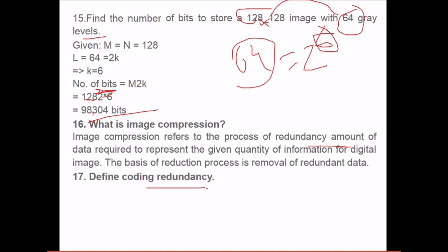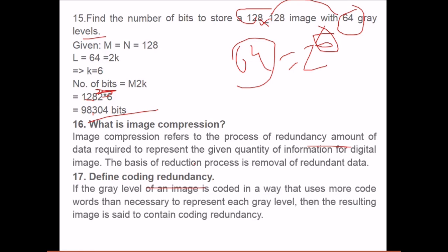With this one more question comes: what is coding redundancy? If the gray level of an image is coded in a way that uses more code words than necessary to represent each gray level, then the resulting image is said to contain coding redundancy. Even if the coding is more than what is intended, that is over-coding, that means coding redundancy will be there.